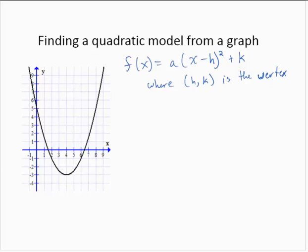From the graph, we can identify the vertex as the ordered pair 4, negative 3. So I can use the 4 as my h and the negative 3 as my k and replace them in the function.